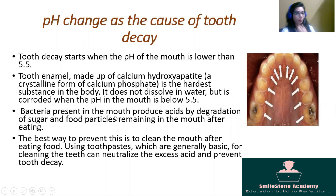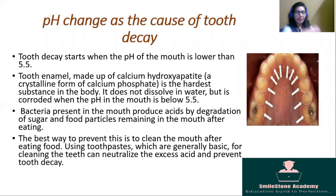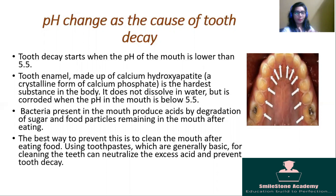So how is this acid produced in our mouth? Bacteria present in the mouth produce acid by degradation of sugar and food particles remaining in the mouth after eating. After eating, food does not enter 100% into our stomach — some food particles and sugar particles remain in the mouth. These food particles are decomposed and degraded by bacteria present in the mouth, and they produce acid. This acid affects your tooth enamel and your tooth gets decayed.